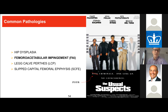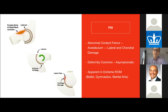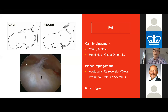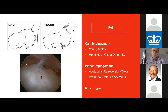The second usual suspect is impingement. The deformity is present in a large percentage of the population, but most are asymptomatic. It becomes apparent in those seeking extremes of hip motion — ballerinas, martial artists, gymnasts. Traditionally, impingement is divided into cam and pincer types. Cam is typical of football and soccer players with a head-neck offset deformity; pincer involves global retroversion of the acetabulum. In reality, most cases are a mixed type.